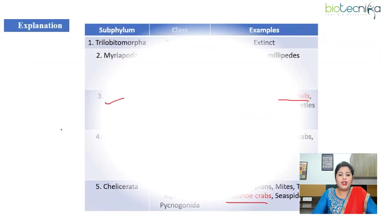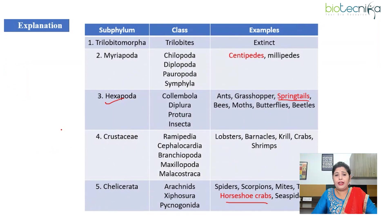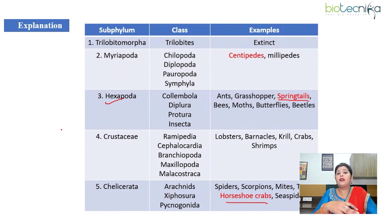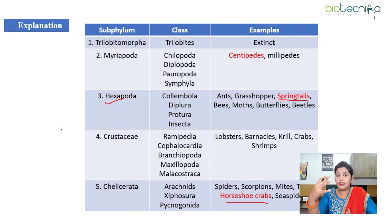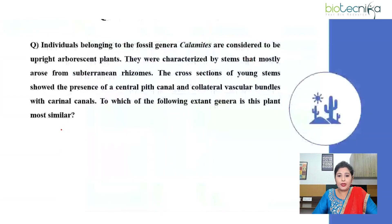These are not very difficult questions. Again, even if you haven't prepared Unit 9 specifically for the CSRNet exam, based on your educational background — if you have studied zoology and animal kingdom in graduation or post-graduation — and your concepts are thorough, you remember the characteristics and examples, you can easily answer these questions.